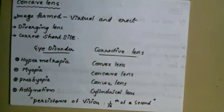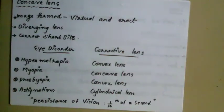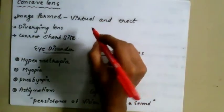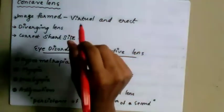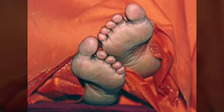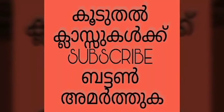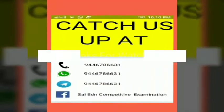A concave lens is a diverging lens. When you look through a concave lens, the image formed is virtual and erect. If the rays are diverging, the lens is a concave lens — also known as a diverging lens.